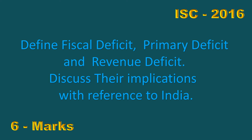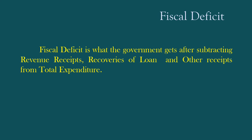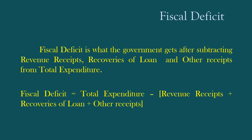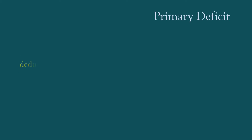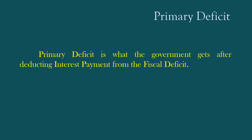The Answer. Fiscal Deficit is what the government gets after subtracting revenue receipts, recoveries of loan, and other receipts from total expenditure. Fiscal Deficit = Total Expenditure minus (Revenue Receipts plus Recoveries of Loan plus Other Receipts). Primary Deficit is what the government gets after deducting interest payment from the Fiscal Deficit.